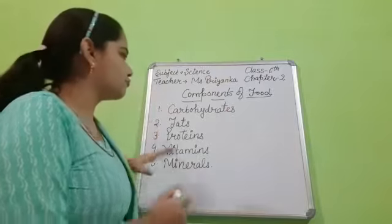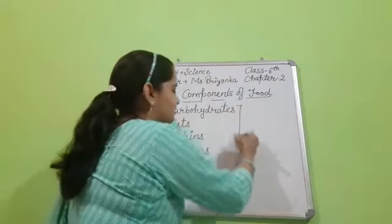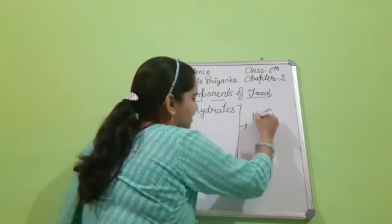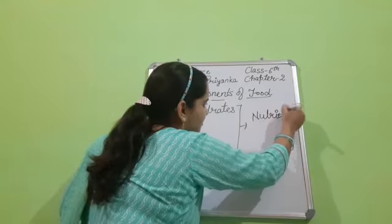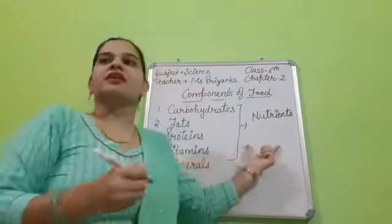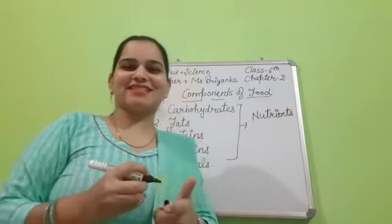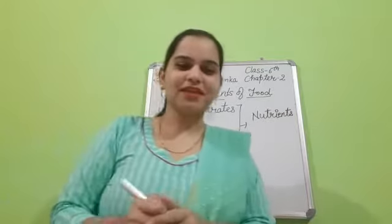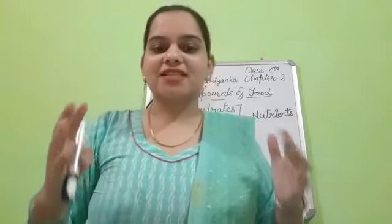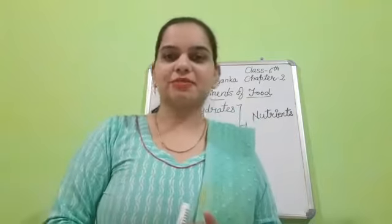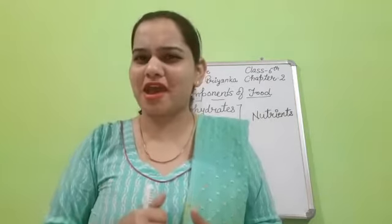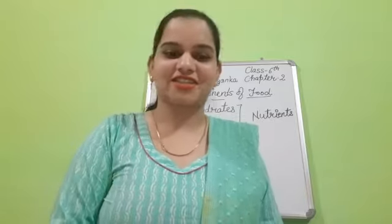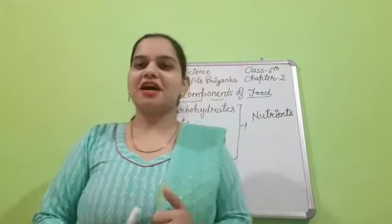The different components of food — what can we call them? Nutrients. Great. Now, nutrients are in fact chemical substances that are present in food and which provide energy. What do they give to our body? Energy. Yes, great. And they provide materials needed by the body.